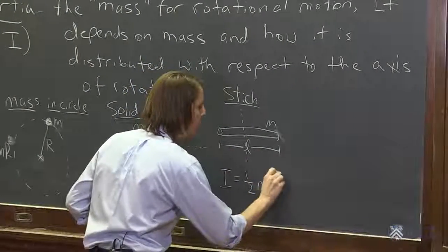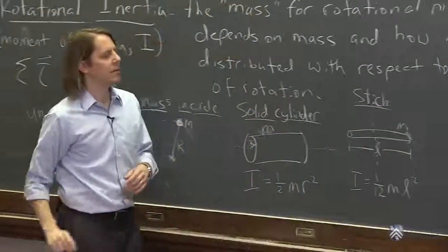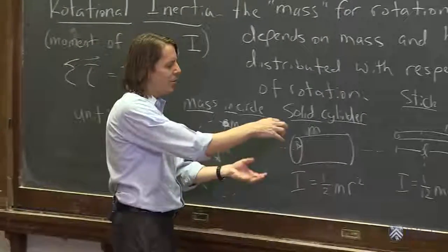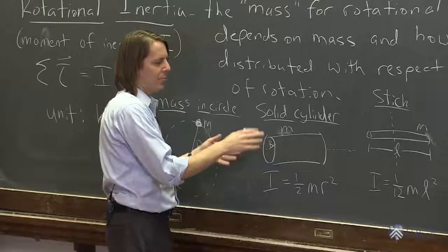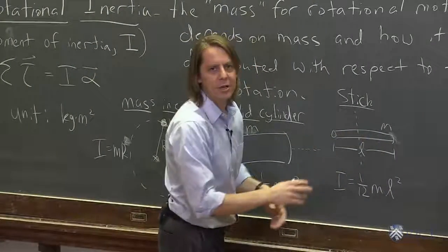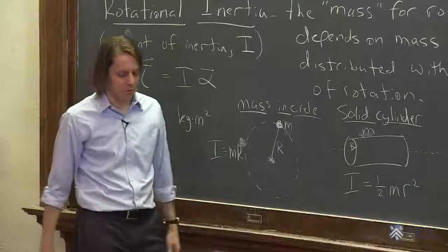M l squared in this case. 1 twelfth. Why so low? Well, you've got to think about how close is the mass to the axis. That brings it down. A lot of the mass is close here. And also, we use the length instead of radius, and that gets squared. So that makes the 1 twelfth pretty low. But again, calculus is the only way to really know.